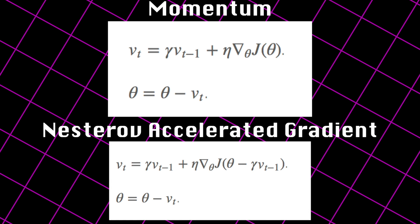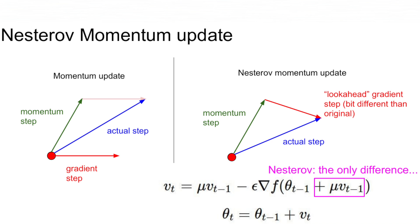In this method, we do the same thing, but in a different order. We first make a jump based on our previous momentum, calculate the gradient, then make a correction, which results in an update. This more anticipatory update prevents us from going too fast, and we're more responsive to changes.